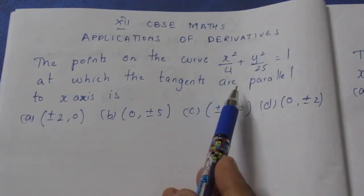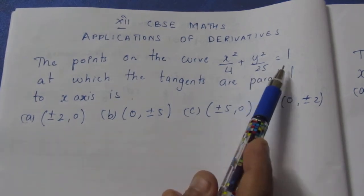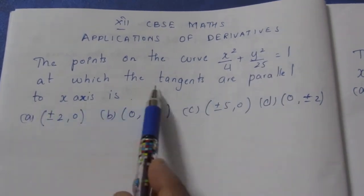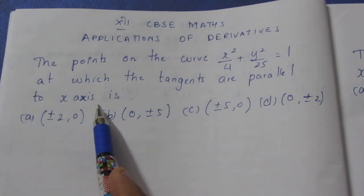The points on the curve x² / 4 + y² / 25 = 1 at which the tangents are parallel to x axis.